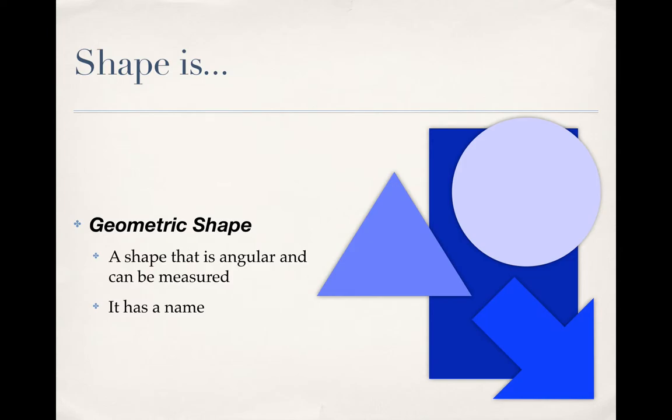So circle, rectangle, triangle, arrow in the examples you see there.